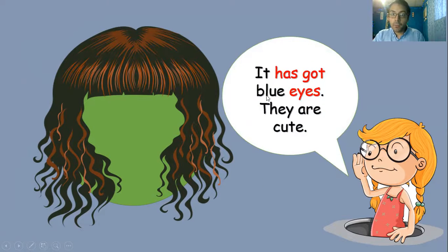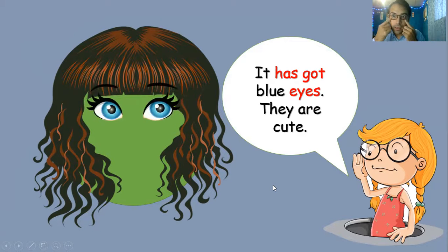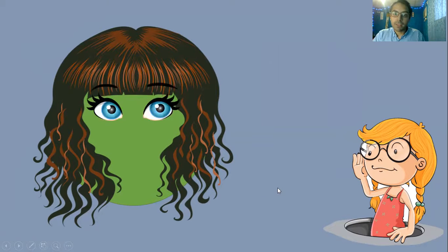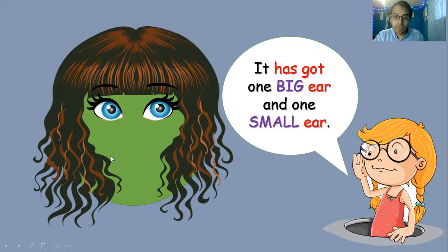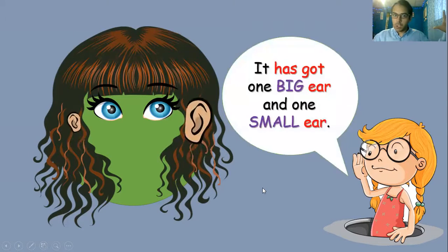It has got blue eyes. ¿Qué era eyes? Los ojos. Y blue es el color azul, entonces tiene ojos azules. They are cute. Son lindos. It has got one big ear and one small ear — tiene una big, que está acá, y otra que es small, chiquitita.